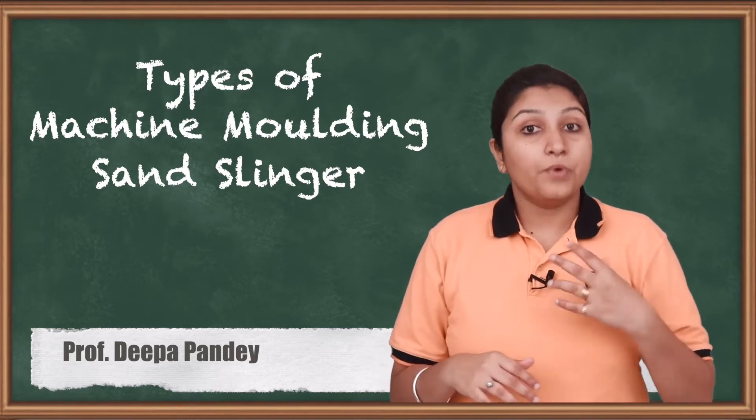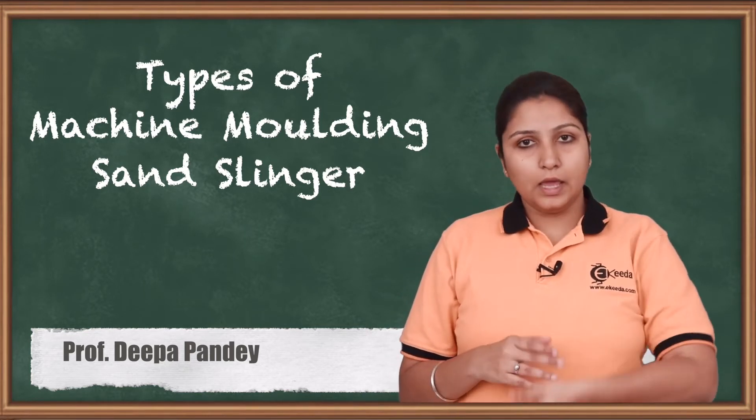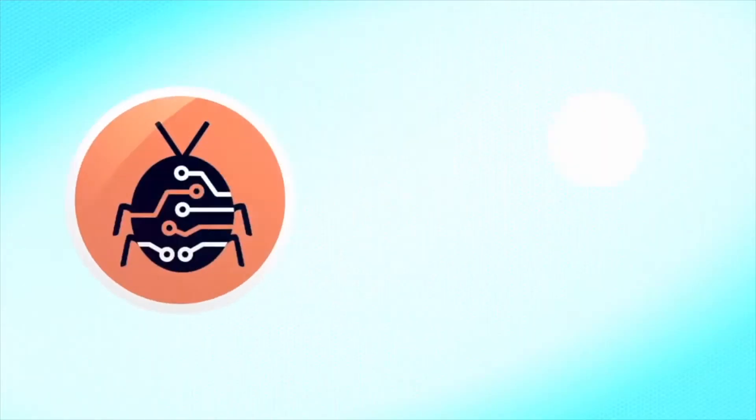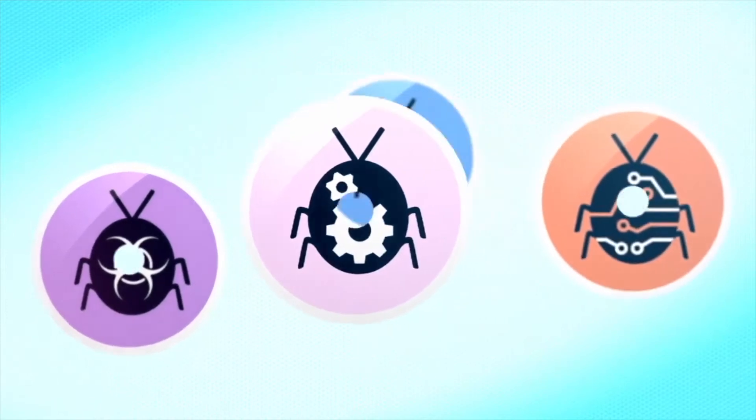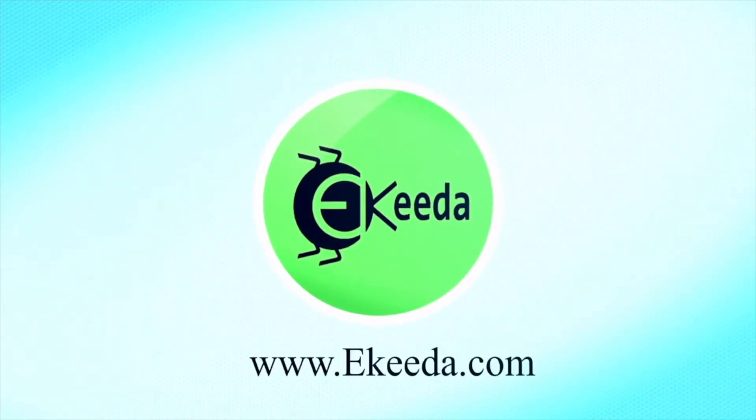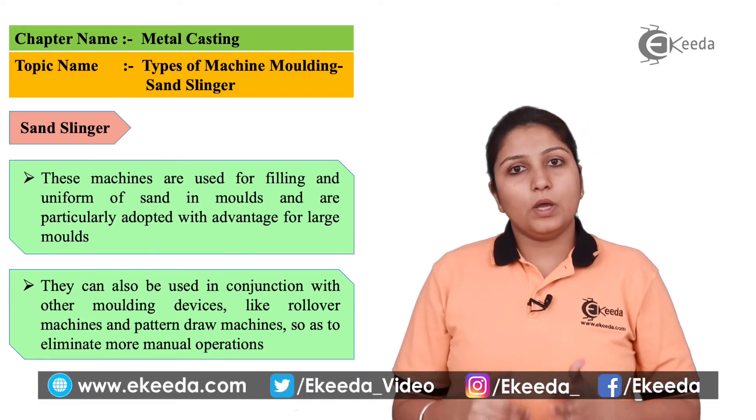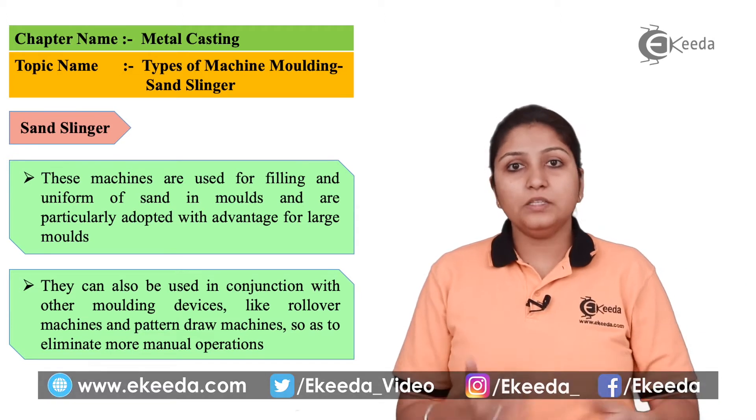As you all know, sand slinger is a device which vibrates the sand and removes the excess impurities. So as the name suggests, this device is used for sand that is taken and mixed.